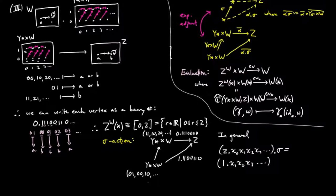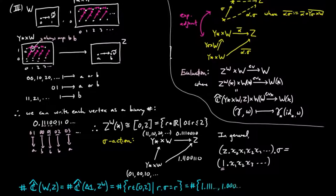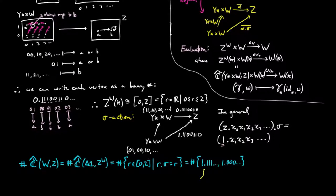So x0 is lost and everything shifts to the left behind the decimal. Then the number of maps from W to Z are all those decimal numbers which are fixed under the action, namely the elements 1.11111 repeating and 1.0000 repeating and no others. The first global element 1.111 repeating is a map which takes 0 and 1 both to B.